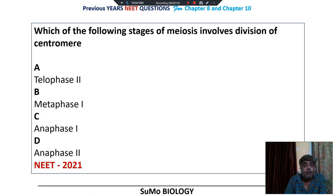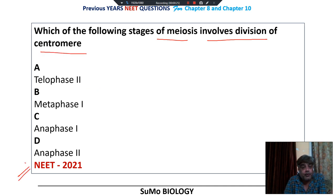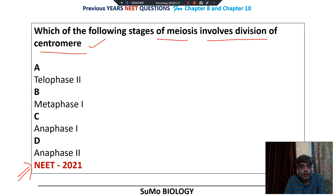Which of the following stages of meiosis involves division of centromere? This is a question from your NEET question paper 2021. Division of centromere occurs during meiosis 2, specifically anaphase 2. So you should go with option number D: anaphase 2, meiosis 2.